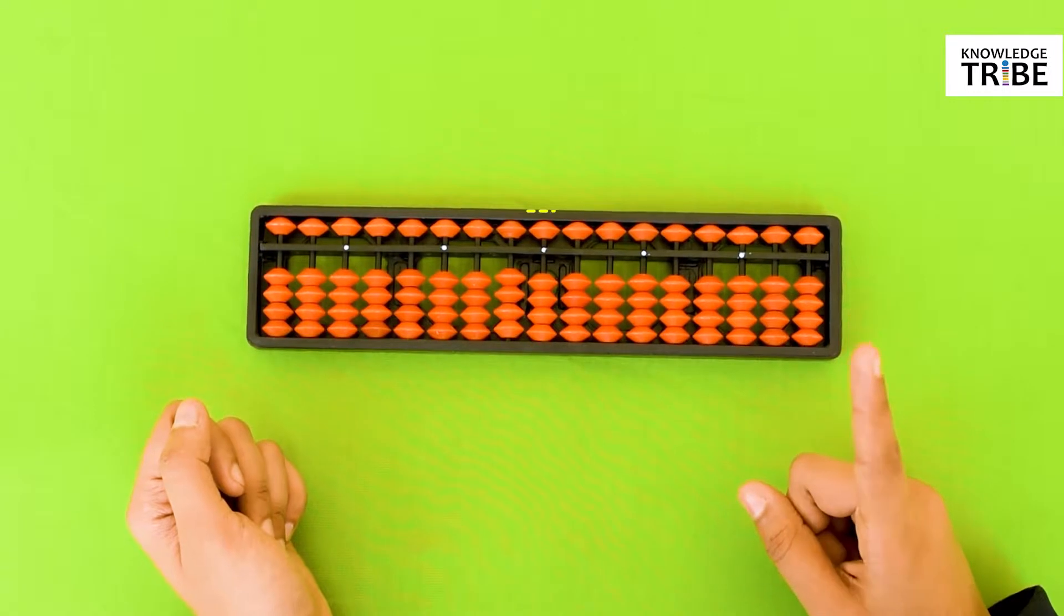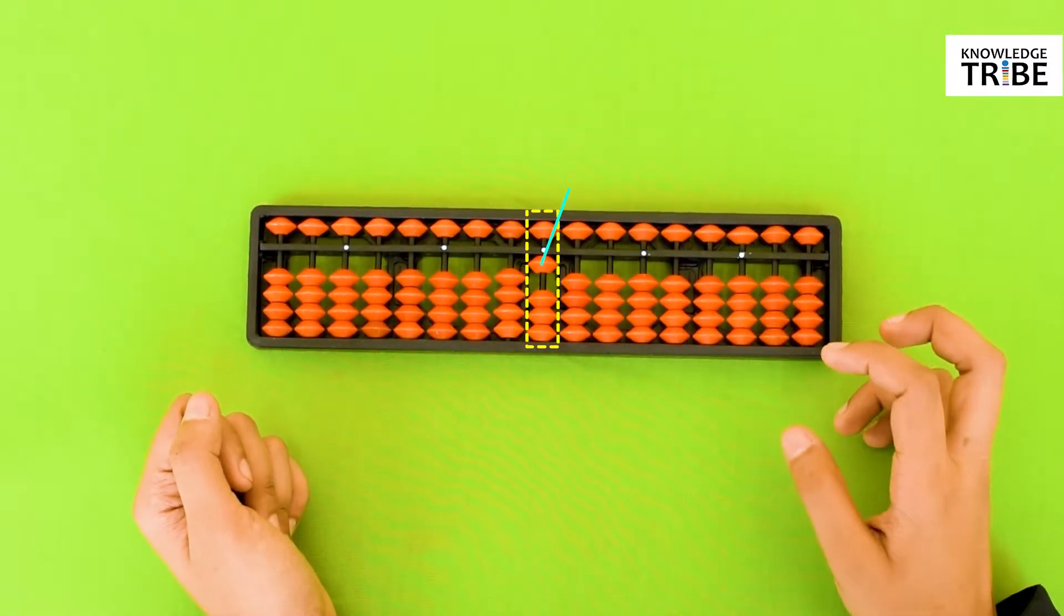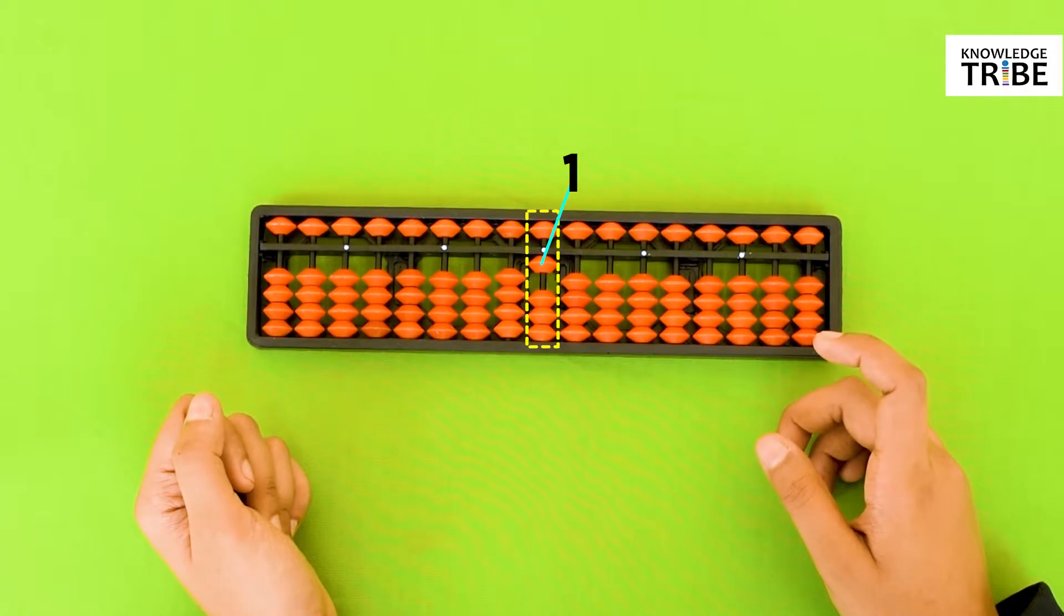To add 1, we have to move one bead from one's column towards the center beam. So this is 1. Tell me how to add 1 to this.